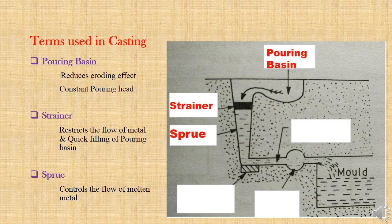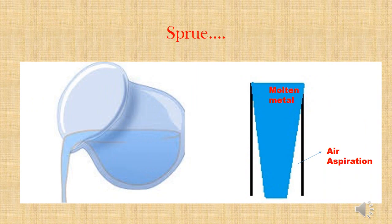Sprue is a vertical passage that controls the flow of molten metal. Velocity of the molten metal in the pouring basin is zero and it reaches some velocity at the bottom portion of the sprue. Sprue will be designed as a converging passage towards the bottom. While pouring, the diameter is more at the top and decreases towards the bottom. If we make the sprue as a straight path, the remaining side portions will be filled by air, which will lead to porous casting and improper filling of the mold cavity. So we use a converging passage for the sprue.